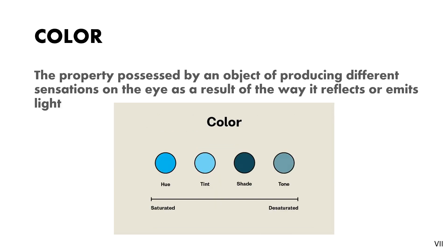Next element of design is color. The property possessed by an object of producing different sensations on the eye as a result of the way it reflects or emits light. If you take any object which is red in color, it is actually not red. It is just able to reflect red color from the spectrum of light. So reflecting red color is the property possessed by the object.